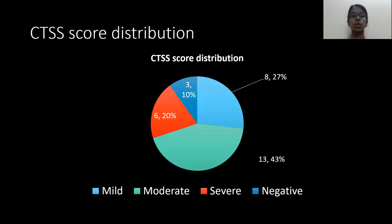Coming to the CTSS score distribution, majority of the patients — that is, 43% of the patients — had moderate disease, 27% of the patients had mild disease, and 20% of the patients had severe disease.